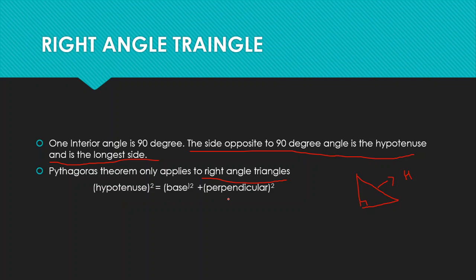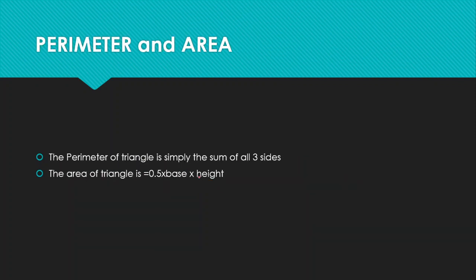To find the perimeter of a triangle, simply sum the three sides. If a triangle has side lengths 1, 2, and 3, the perimeter is 6. The area of a triangle is 0.5 multiplied by base multiplied by height, or equivalently one-half times base times height.